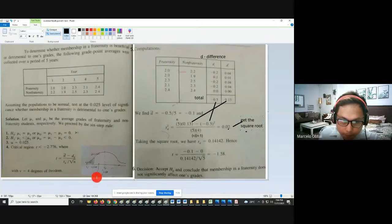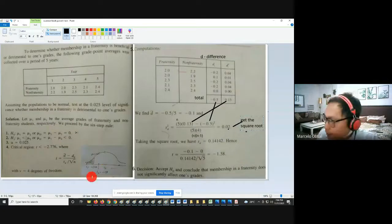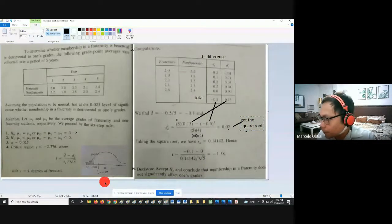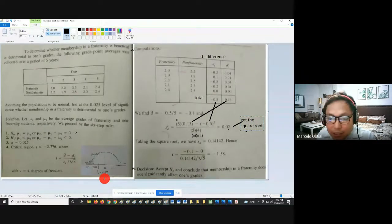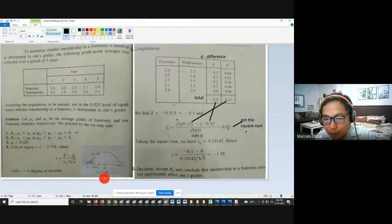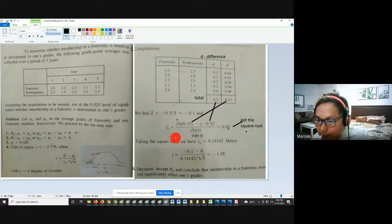It's here. The question here, I hope makita pa. Is negative 1.58 is beyond negative 2.776 or before? So, I think we'll agree it should be before. So, nasa unshaded portion siya, not shaded portion. So, therefore, you will accept. Again, kapag nasa not shaded portion siya, you need to accept. Kapag nasa shaded portion siya, you need to reject your null hypothesis.